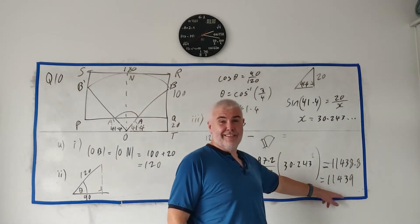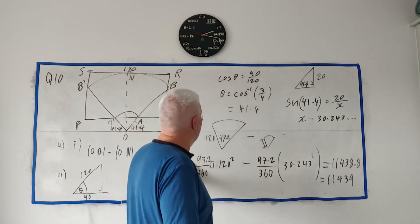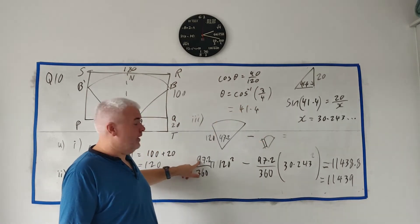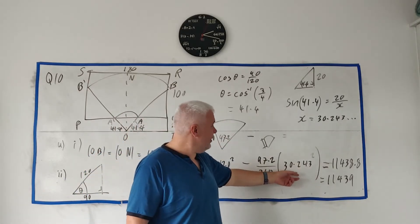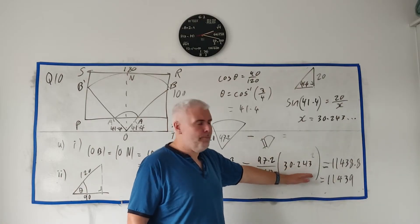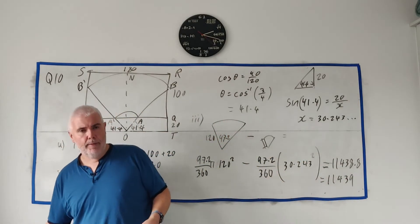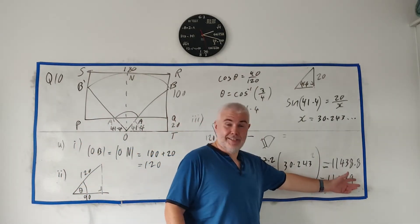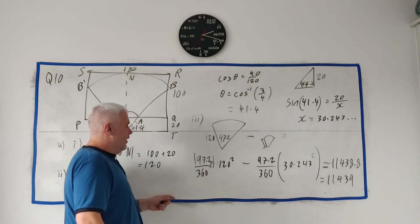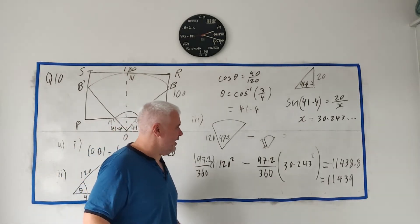A warning: because we rounded 41.4° and 97.2° at intermediate steps, your final answer could differ by plus or minus three or four units from the marking scheme answer. The examiner is mainly looking for the correct method. Using the unrounded values throughout will give a more accurate result, so don't worry if your answer differs slightly.